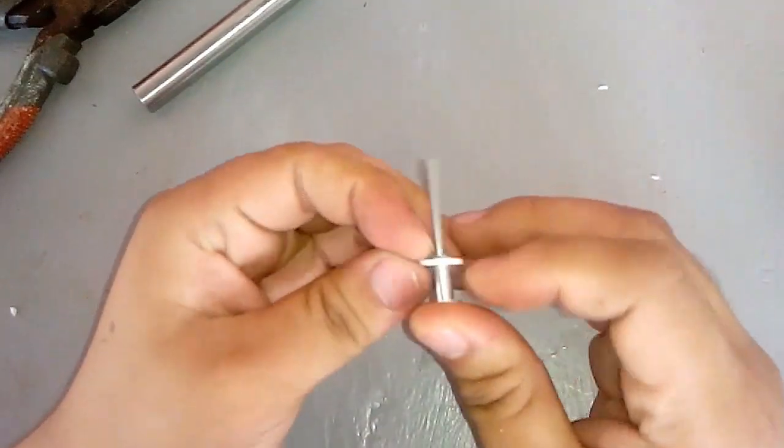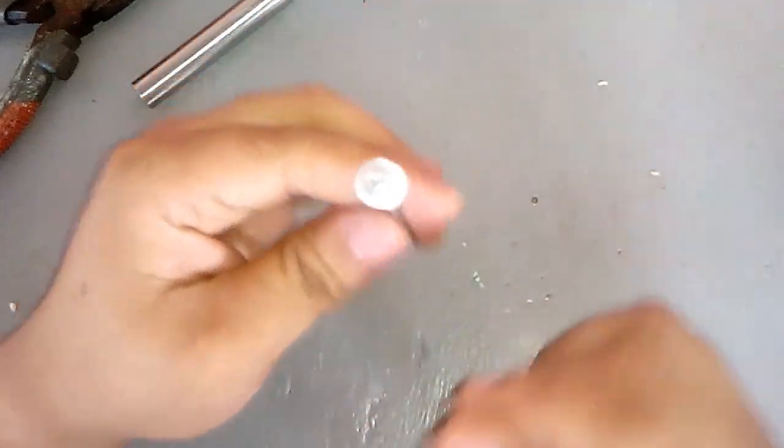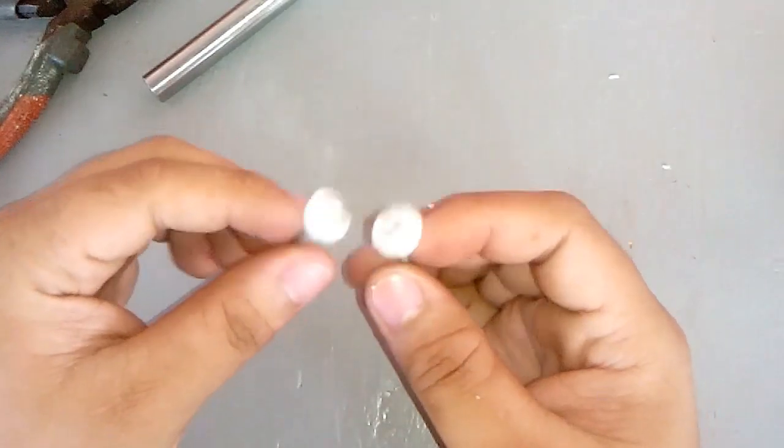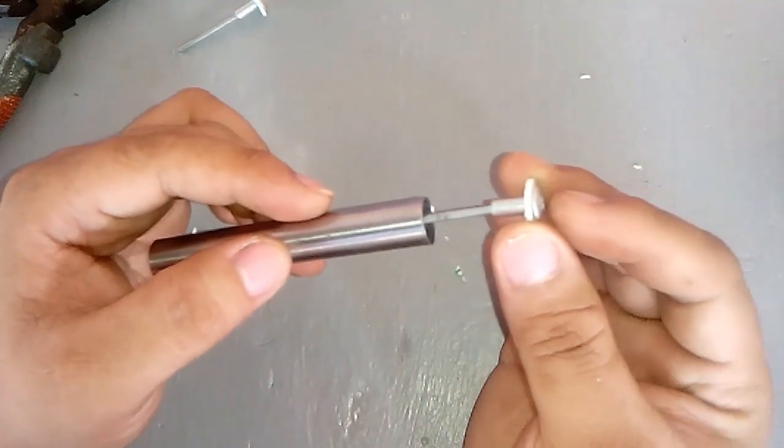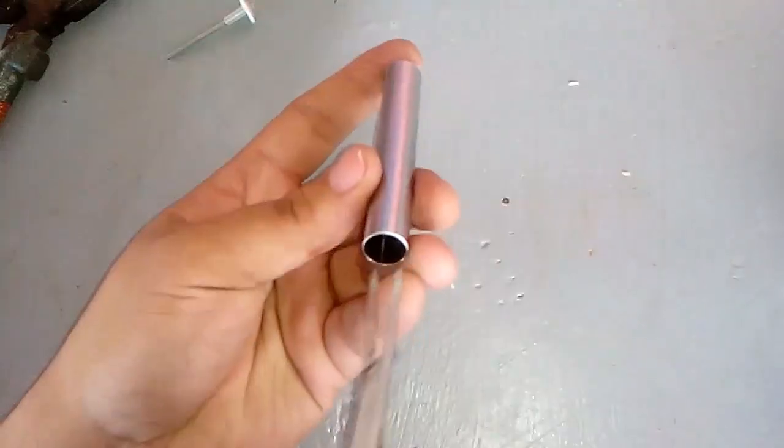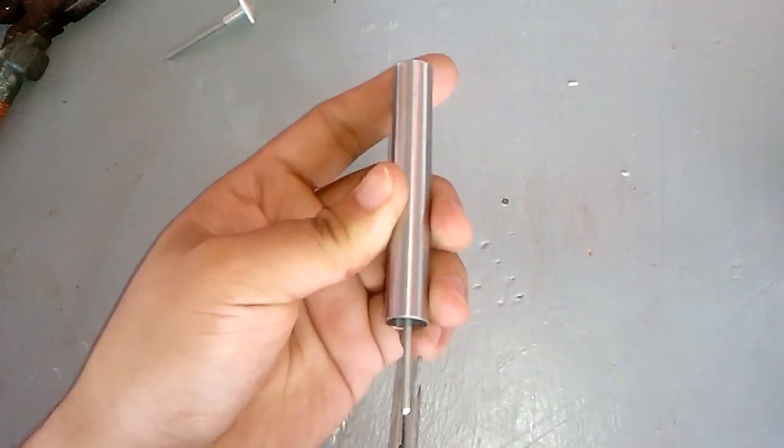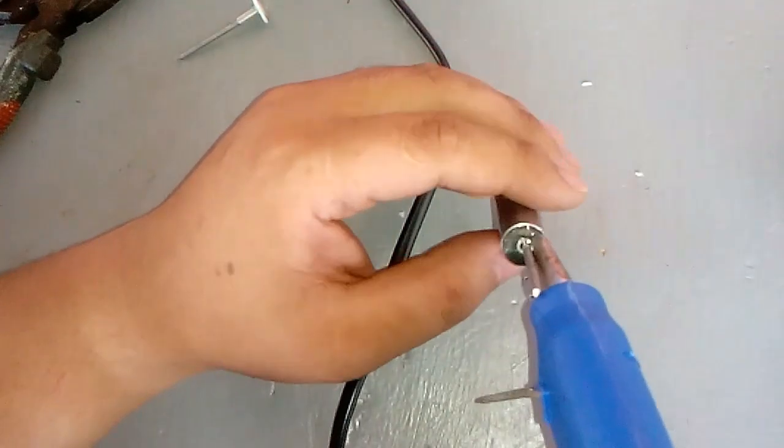Put the rivet inside the half-inch tube and pull it with long tweezers. Fill the gap with hot glue.